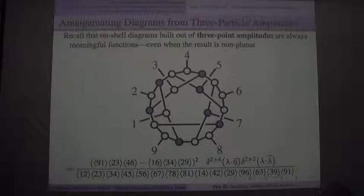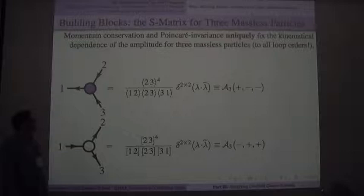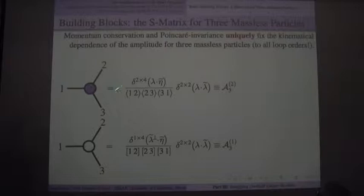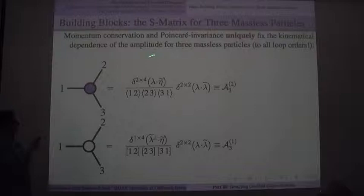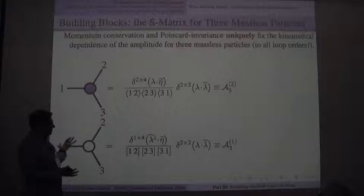Just to remind you what these three-point amplitudes look like: a blue vertex is a function of just the lambdas, and it requires that all the lambda-tildas are proportional to each other. And this is just a function of the lambda-tildas, and it tells you that the lambdas are proportional to each other. For most of this talk you can ignore the supersymmetry business — you can consider this some part of a general numerator appropriate to the three-particle vertex. In N=4 or N=8 it looks something like this.